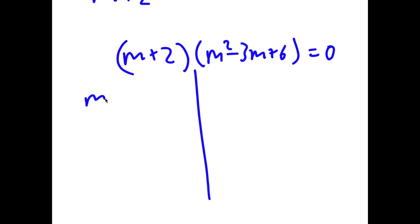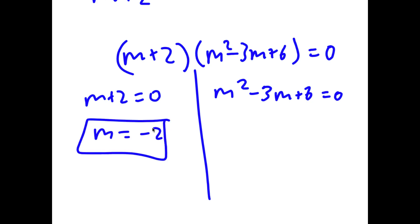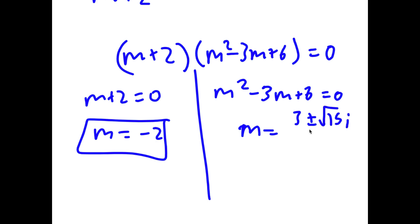So now we have m plus 2 times m squared minus 3m plus 6 is equal to 0. We have two equations: m plus 2 equals 0, giving m equals negative 2, which we already found. And m squared minus 3m plus 6 equals 0, for which we have to use the quadratic formula. You should get that m is equal to 3 plus or minus the square root of 15i, over 2.